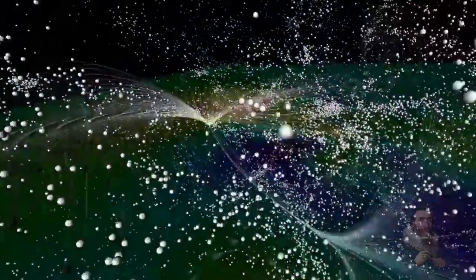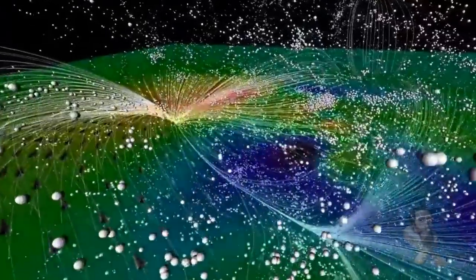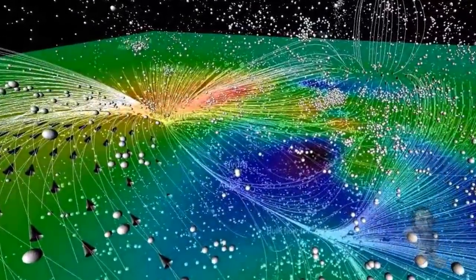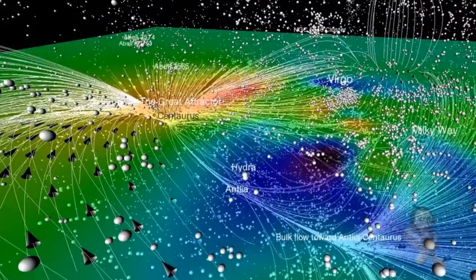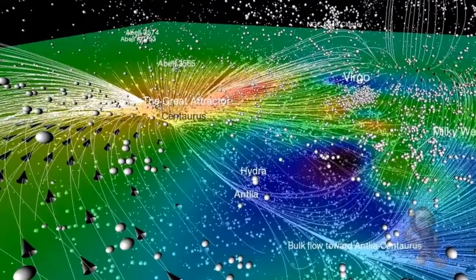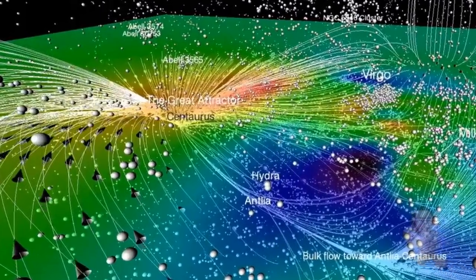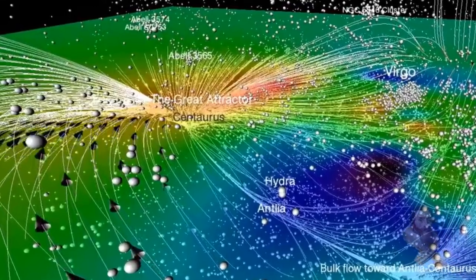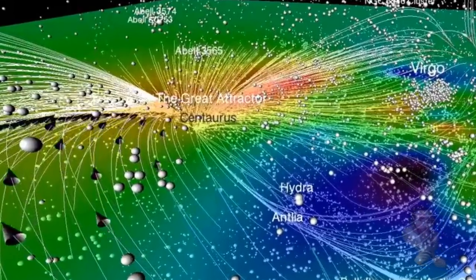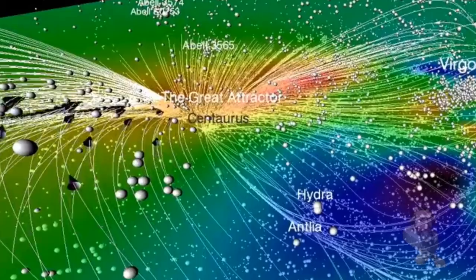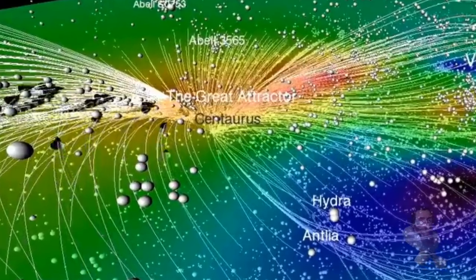And if we survive any or all those scenarios, there is always the death of our sun in eight billion years, or even sooner if Nostradamus is to be believed, or maybe the collapse of the Higgs boson field, or the eventual heat death of the universe.